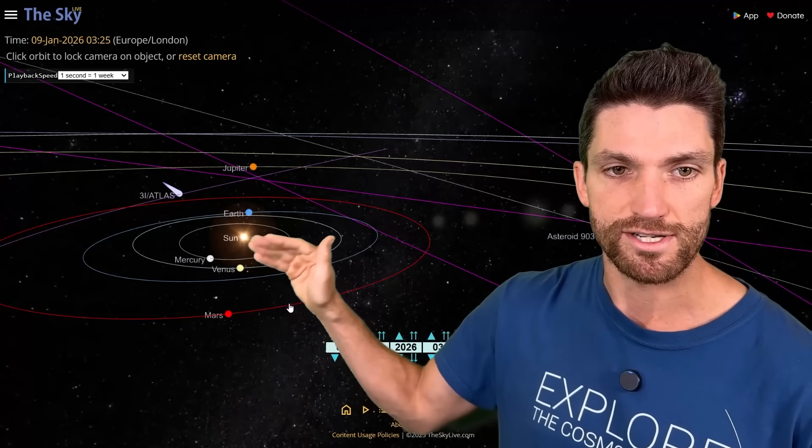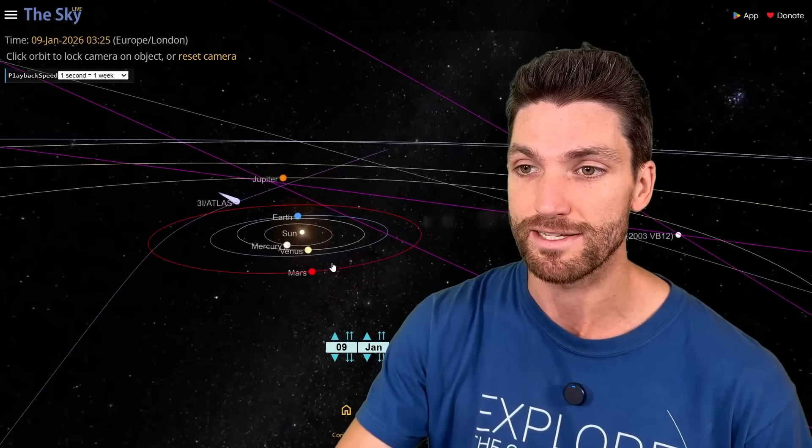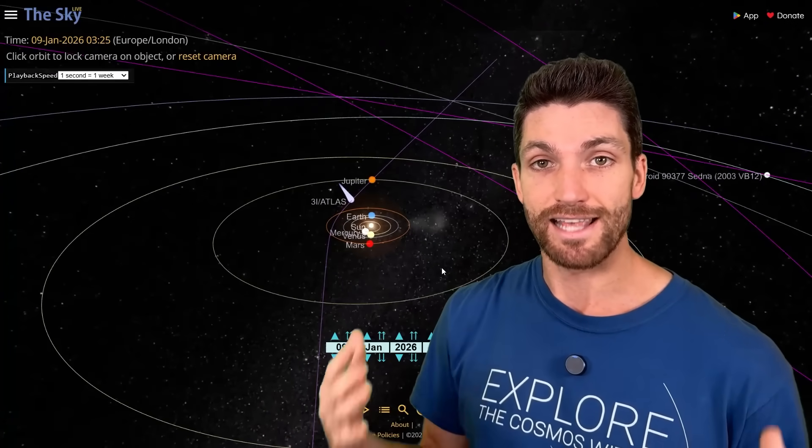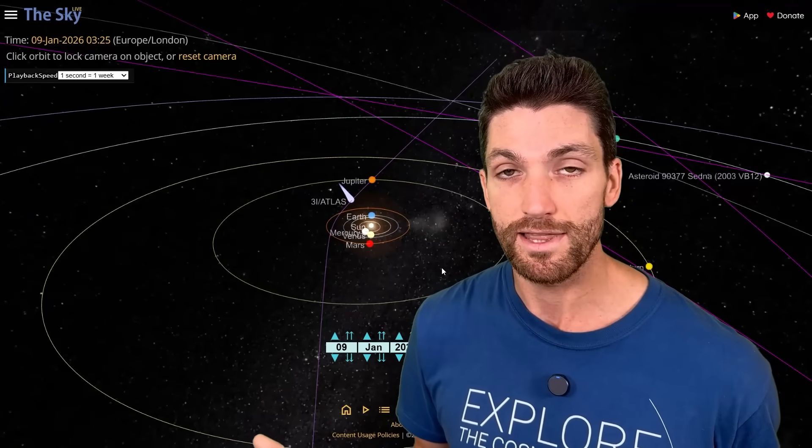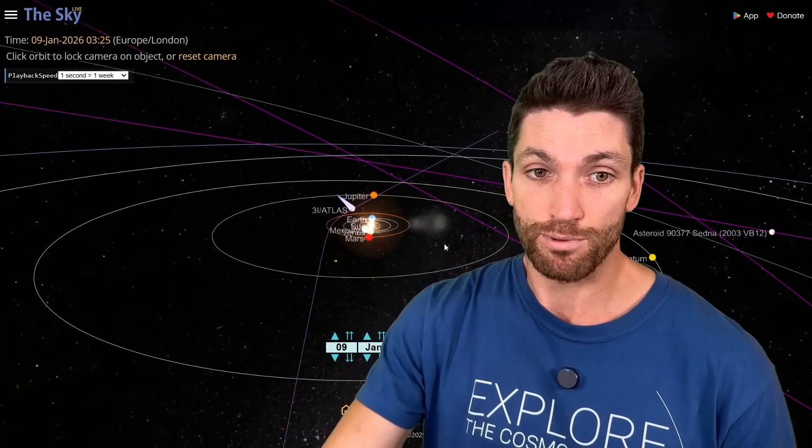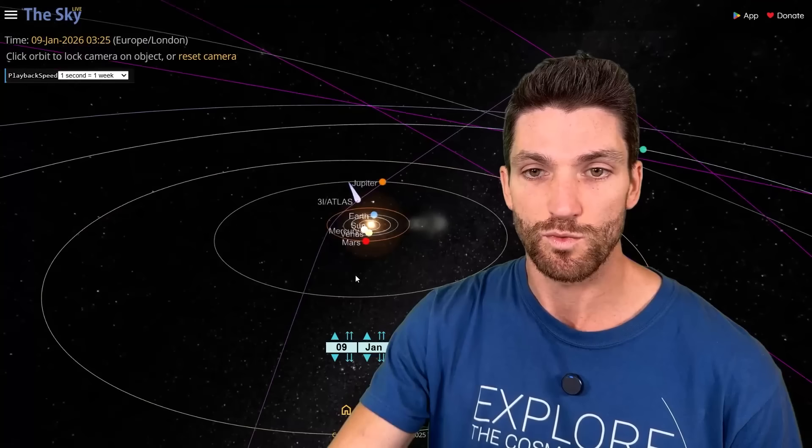We have Mars, Venus, Mercury, Sun, Earth, Jupiter, and 3i Atlas is pretty close to that alignment. As you see, we really zoom out, and it's pretty darn close. At least it's there, whereas if 3i Atlas didn't fly into our solar system, it wouldn't be there at all. So that's really how I'm looking at this. It's pretty well participated in it, and it's right basically on the ecliptic plane at that moment in time as well.